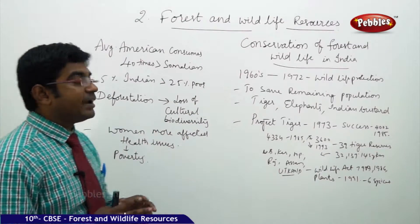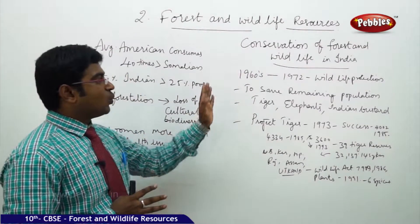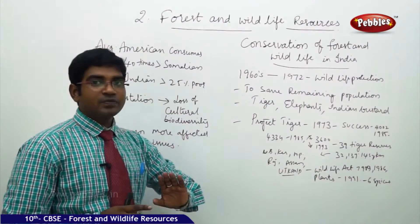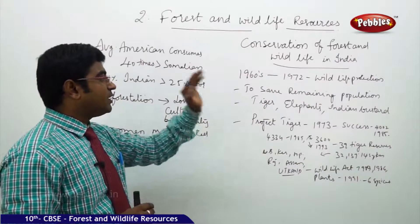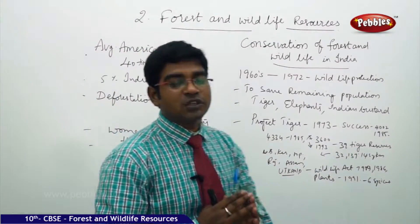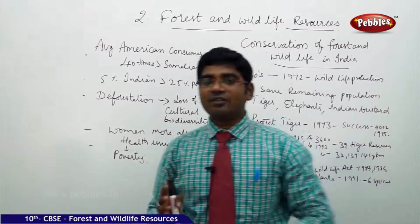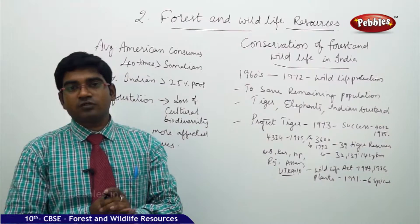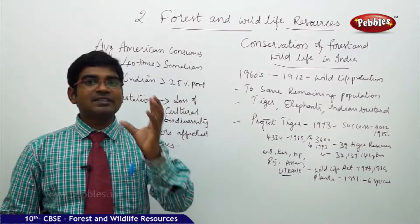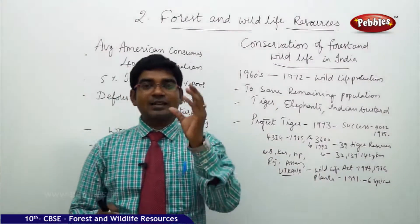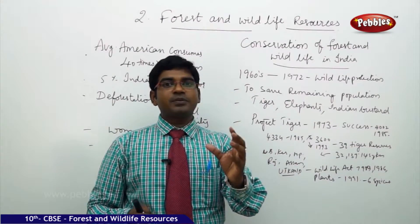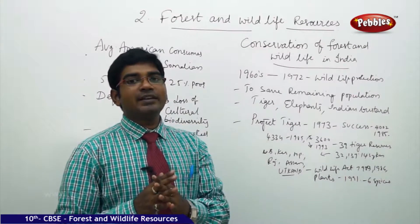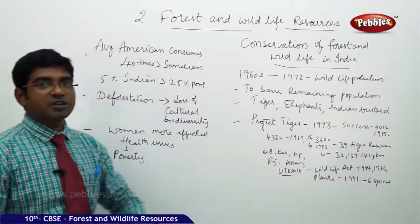Certain laws were brought in the 1960s, with additions in 1972 where wildlife protection was also added. The main intention was to save the remaining population, preserve the remaining biodiversity, and preserve the extinct species which are rare to find in other corners of the world. Let us preserve whatever diversity is available for us at this moment and try to preserve the endangered species of flora and fauna. These were the main targets of the 1972 Wildlife Protection Act.